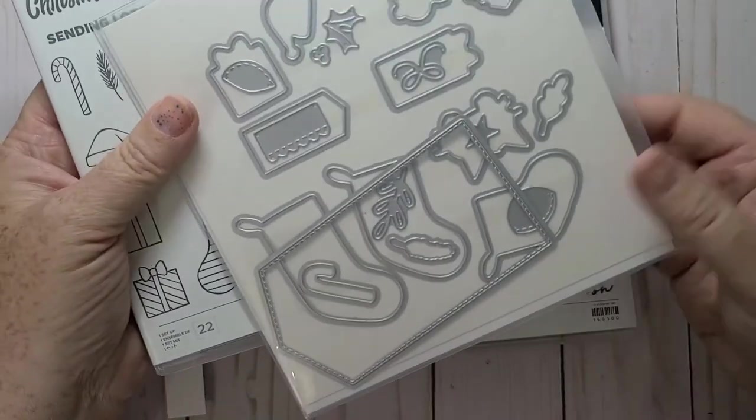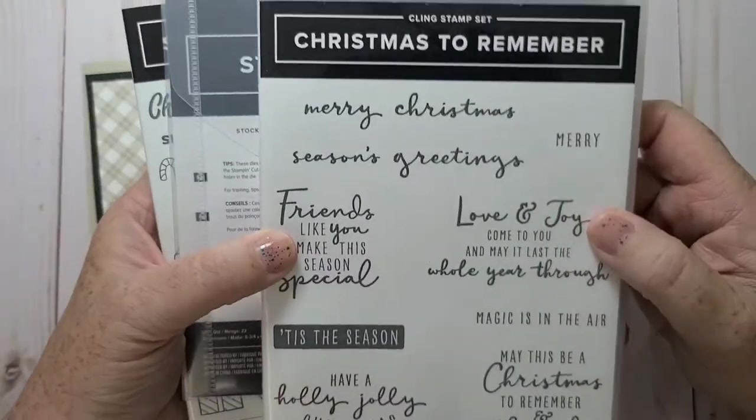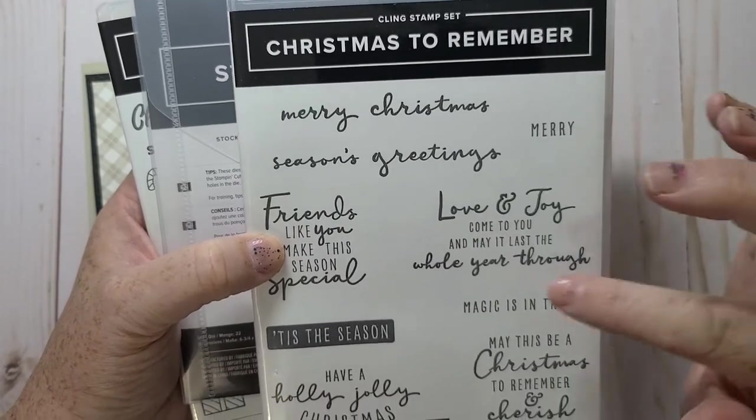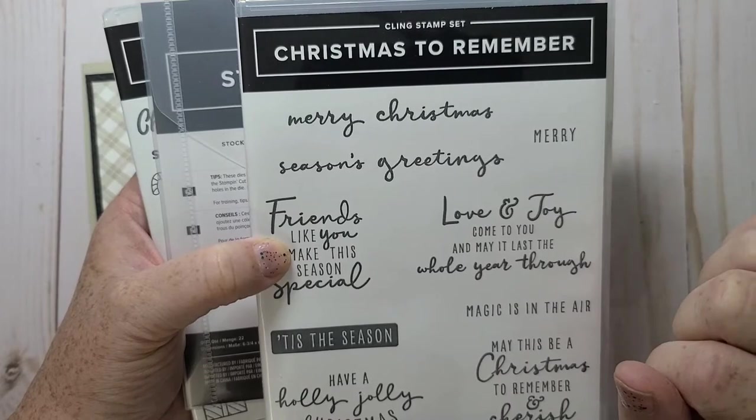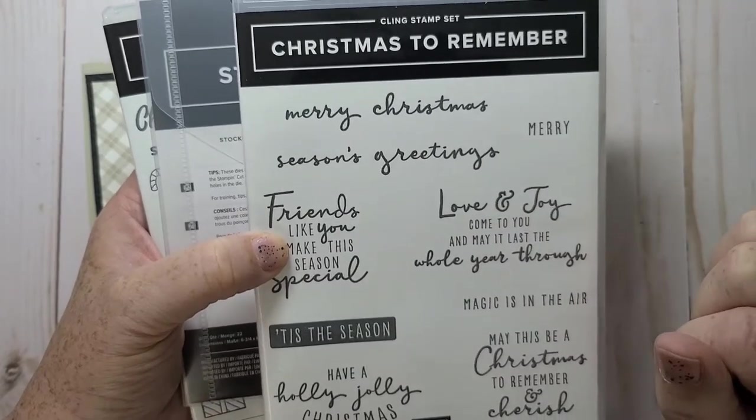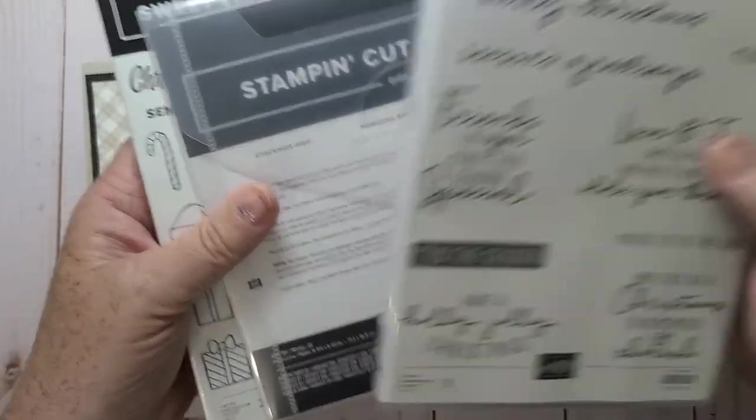I'm also going to use the coordinating dies, these are the Stocking Dies, and then my sentiment is going to come from Christmas to Remember. These are all upcoming products that will be live on August 3rd in the new upcoming mini catalog.